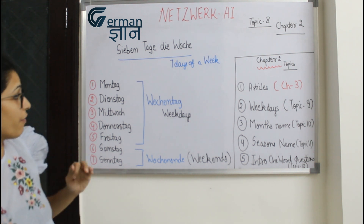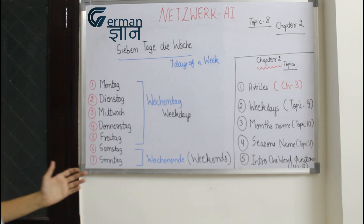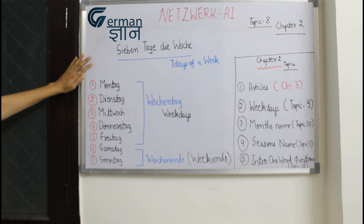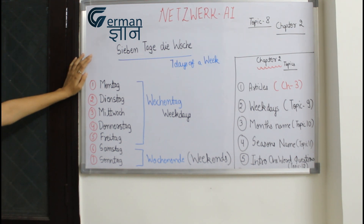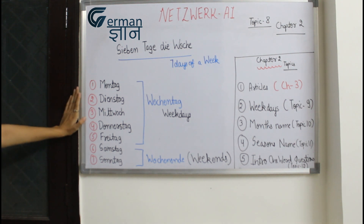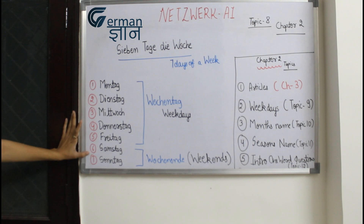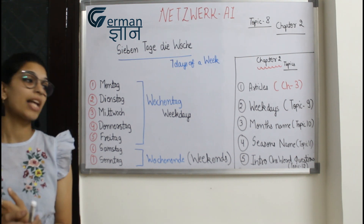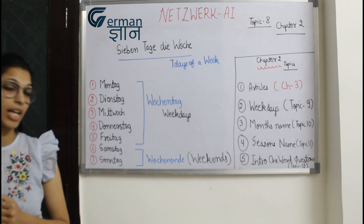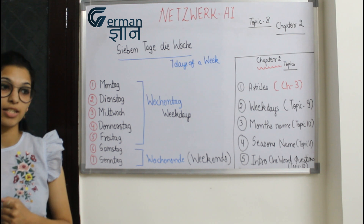I am again pronouncing each and every one of the 7 days: Montag, Dienstag, Mittwoch, Donnerstag, Freitag, Samstag, Sonntag - Wochentag which is weekdays, and Wochenende which is weekends.